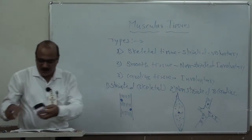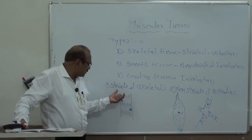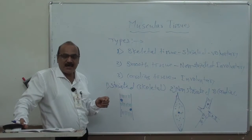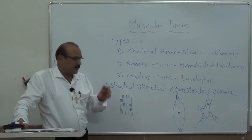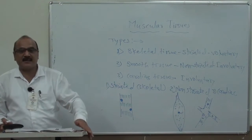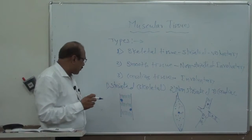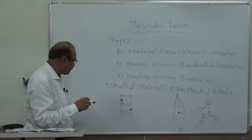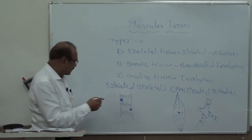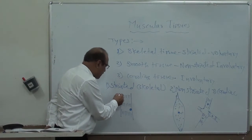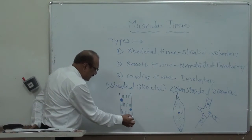In striated tissue, striations are present because the tissue contains actin and myosin filaments — two types of proteins. These actin and myosin filaments are present in particular regions, creating the striations. The nucleus is present in an eccentric position, and the ends of these cells are non-polar ends.